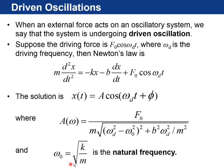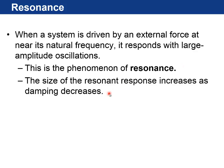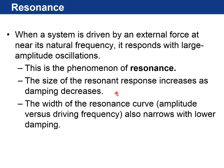And yeah, omega sub 0 is what's called the natural frequency. So when a system is driven by an external force at or near its natural frequency, it responds with large amplitude oscillations. This phenomena is called resonance. The size of the resonant response increases as the damping decreases. So if you've got less friction, then you get a higher amplitude. The amplitude actually goes to infinity if the damping was zero. And the width of the resonance curve also will narrow as you lower damping. So you have to be closer and closer to the specific frequency in order to get resonance if there's less and less damping.